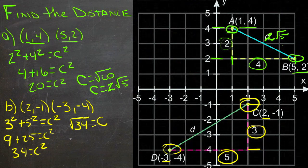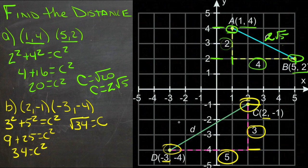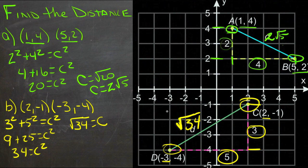34 is 17 times 2. 17 is prime, so that's not going to reduce. So we're just going to get the square root of 34 as our distance between our two points. That's all there is to it.